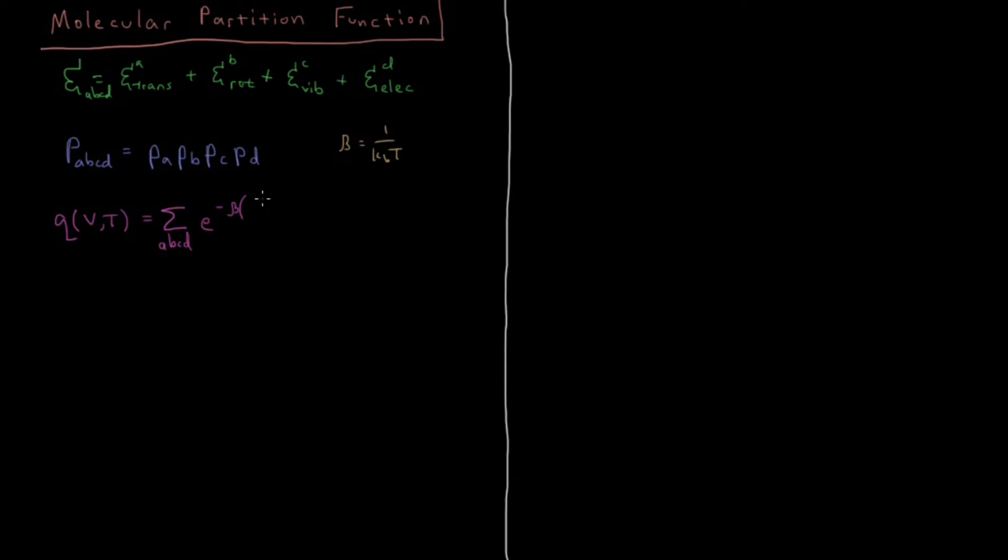Remember, beta is just 1 over Boltzmann constant times temperature. It's just easier to write up in these factors here, e to the minus beta, epsilon a, plus epsilon b, plus epsilon c, plus epsilon d. So it's the energy of the translational, rotational, vibrational, and electronic parts.